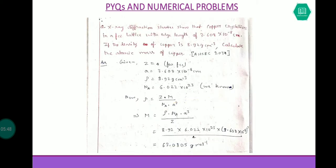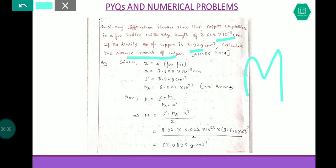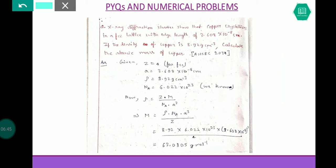Next question: X-ray diffraction studies show that copper crystallizes in an FCC lattice with a given edge length. If the density of copper is given, calculate the atomic mass of copper — you have to find the value of m. Since it is FCC, z = 4. The formula rearranges to m = ρNa³/z. Put the values and get the answer.